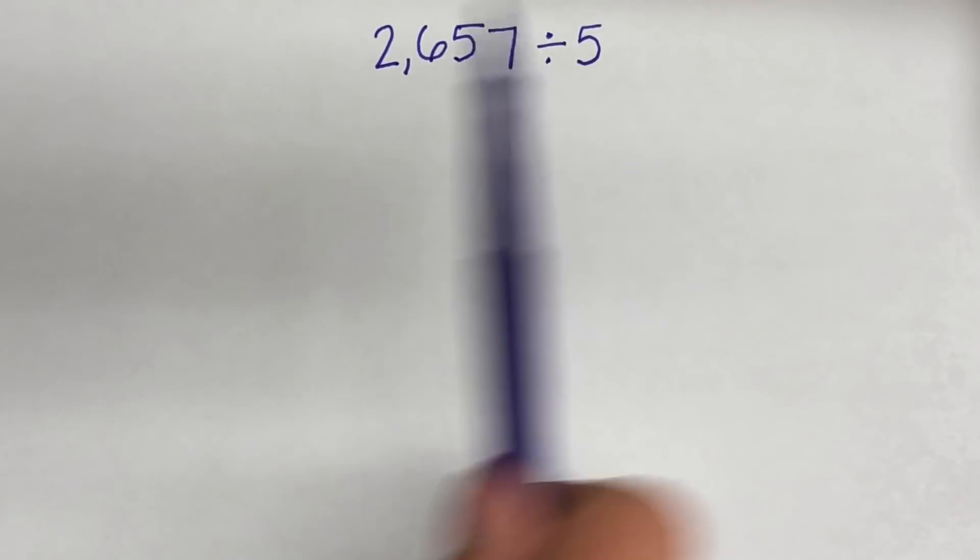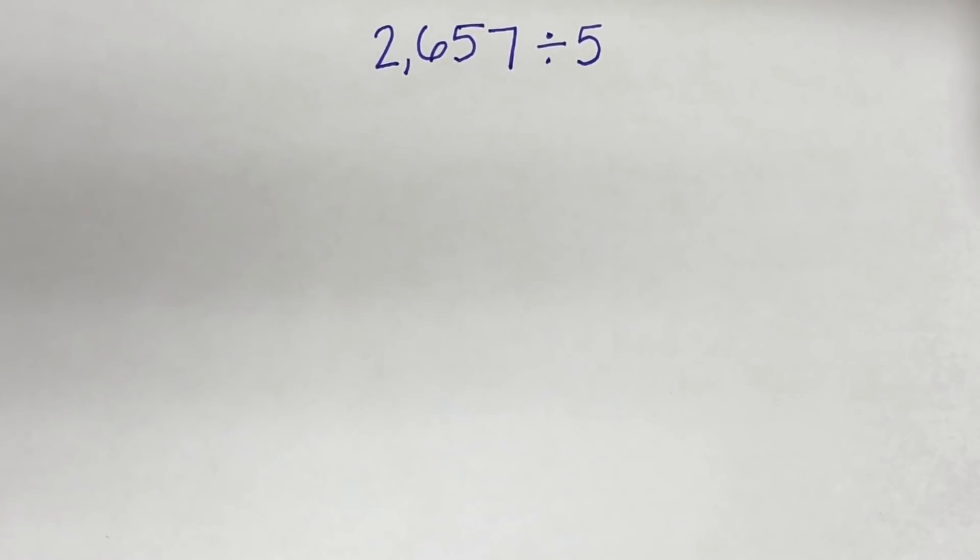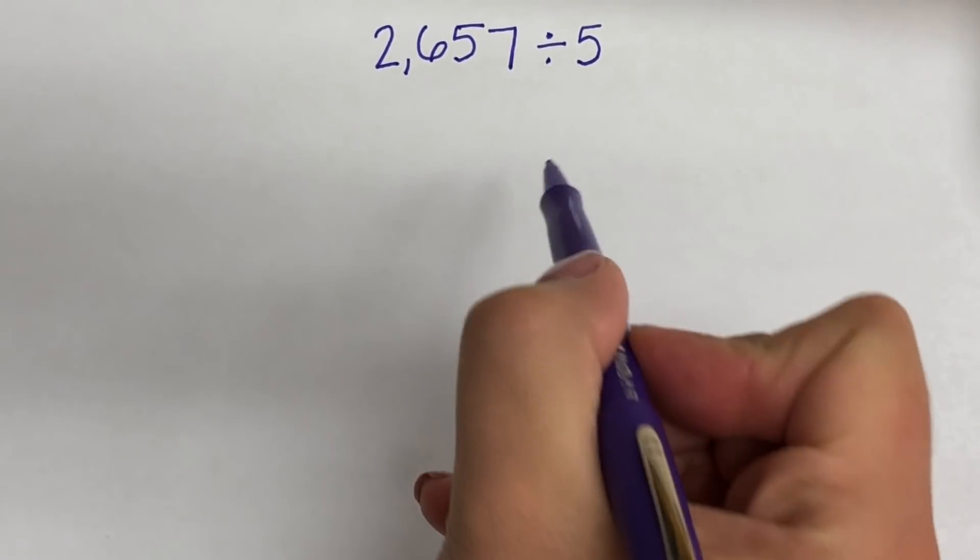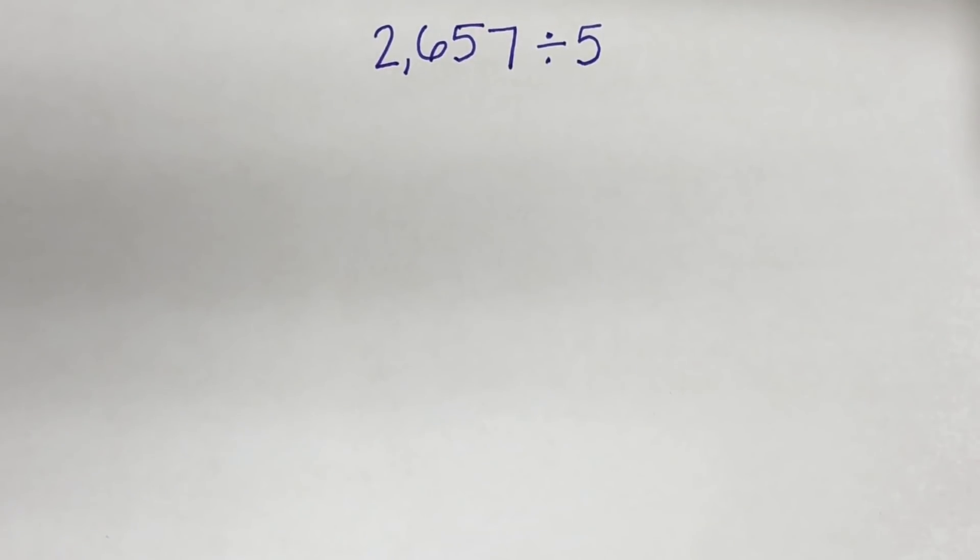Now looking at this problem right away, I already know that my problem is going to have a remainder in the quotient because the number ends in 7. And I know that if it was a multiple of 5, it would end in 5 or 0. So since it doesn't, I know 5 doesn't go in there evenly, which means it will have a remainder.